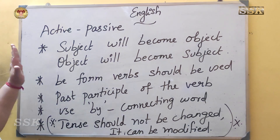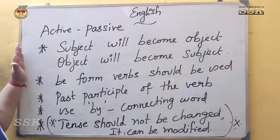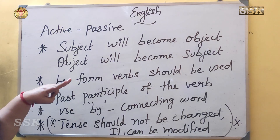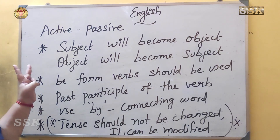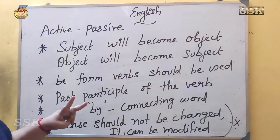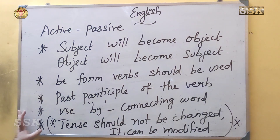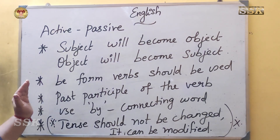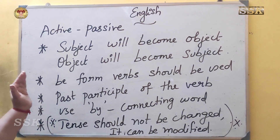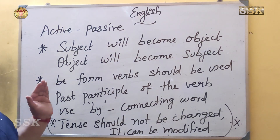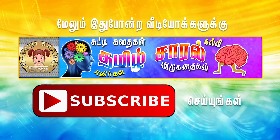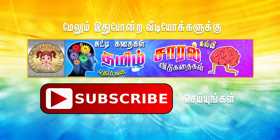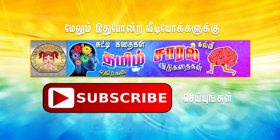So what did we cover in this class? What is voice? What is active or passive? And the general rules for conversion. This is the explanation. We will continue in the next class. Thank you, guys. Bye.